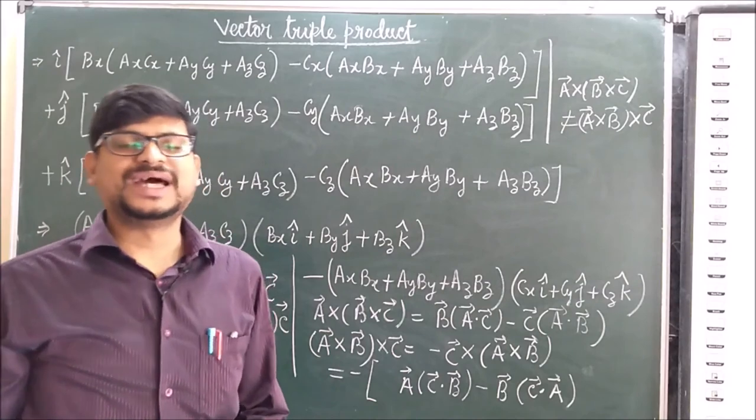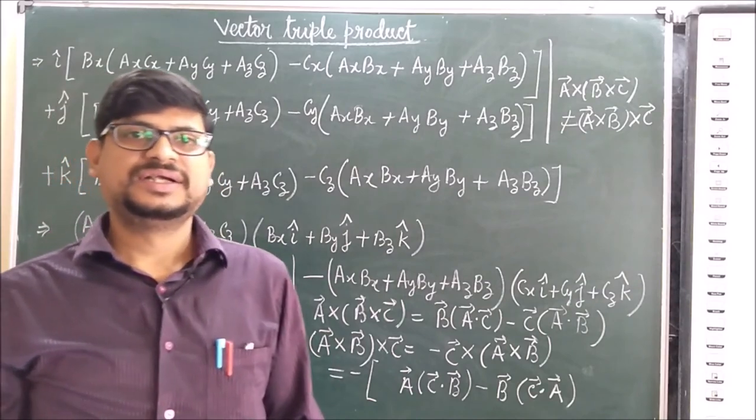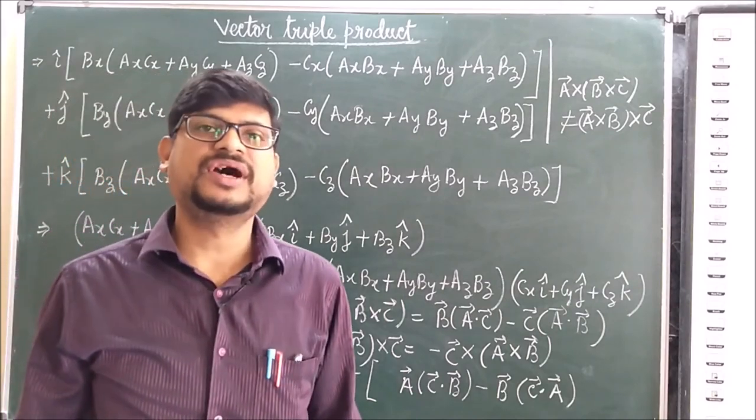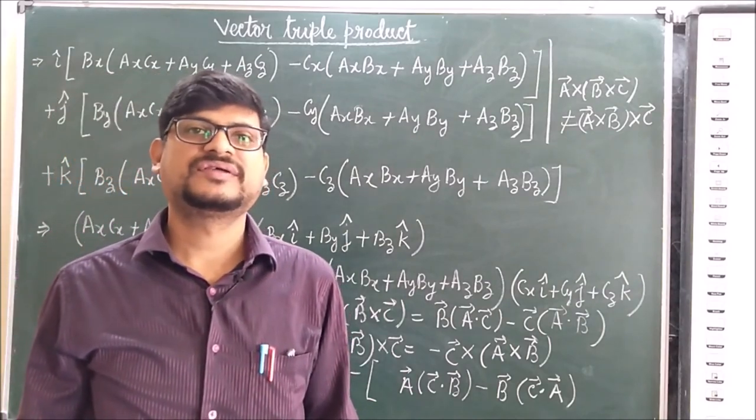So today we have seen the vector triple product of vectors and derived the BAC-CAB rule: A cross (B cross C) equals B(A·C) minus C(A·B).